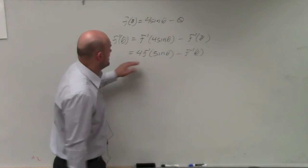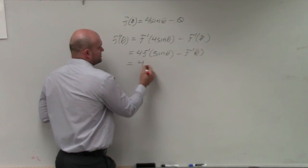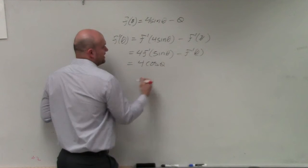So in this case, if we have the derivative of sine, it's just going to be cosine. That's times 4, so we have 4 cosine of theta.